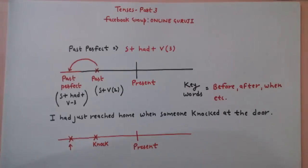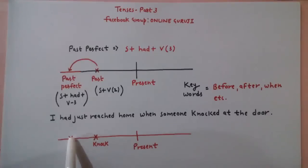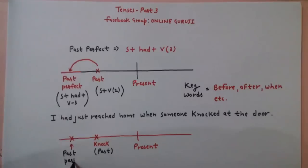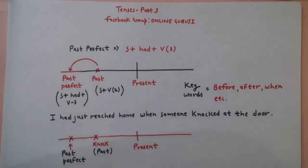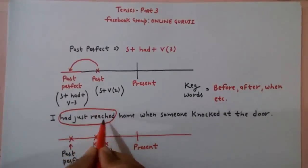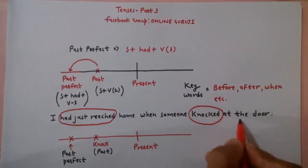इस example पे दो events हैं past पे. पहला क्या हुआ — आप लोग घर पहुँचे. उसके बाद का event क्या है — दरवाजे पे किसी ने knock किया. First event: आप लोग घर पहुँचे. Second event: किसी ने दरवाजे पे knock किया. तो यह knock past है और यह past perfect हो जाएगा. 'I had just reached home' — had reached — यह Past Perfect. 'When someone knocked' — Simple Past.